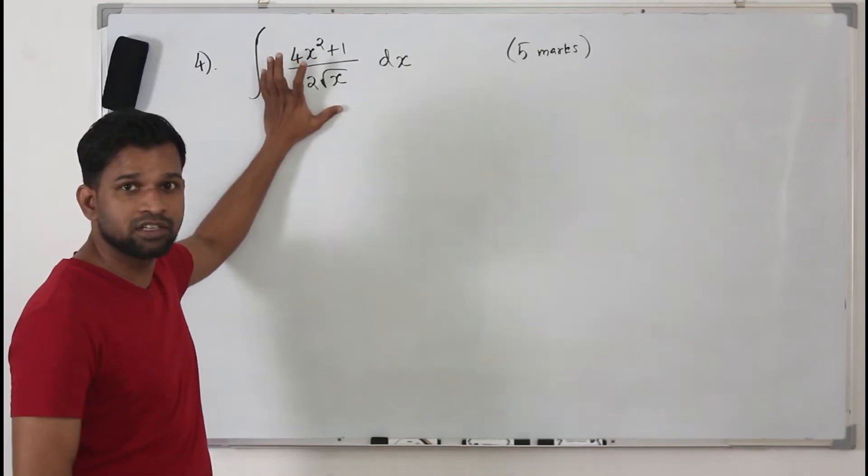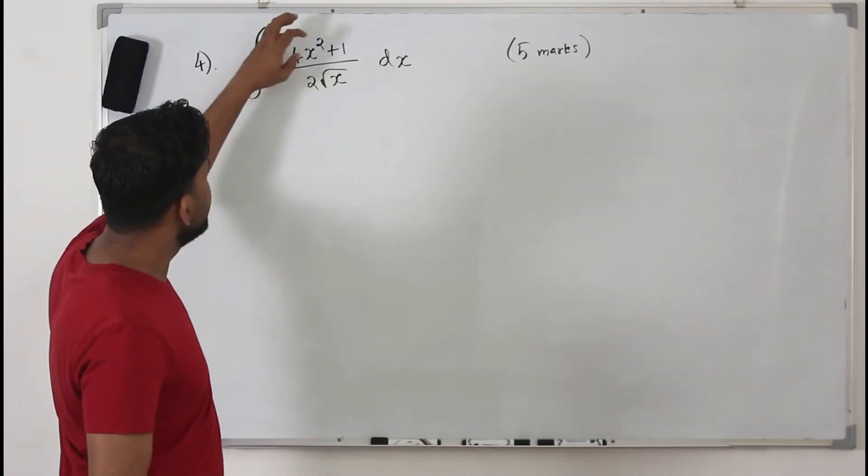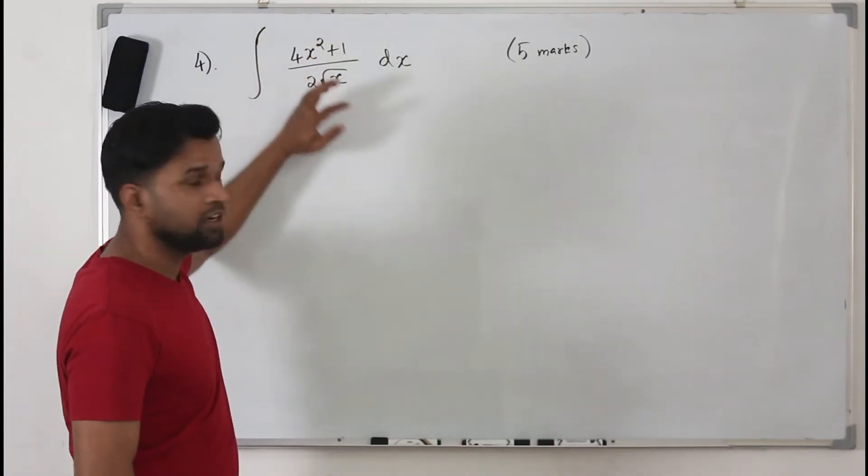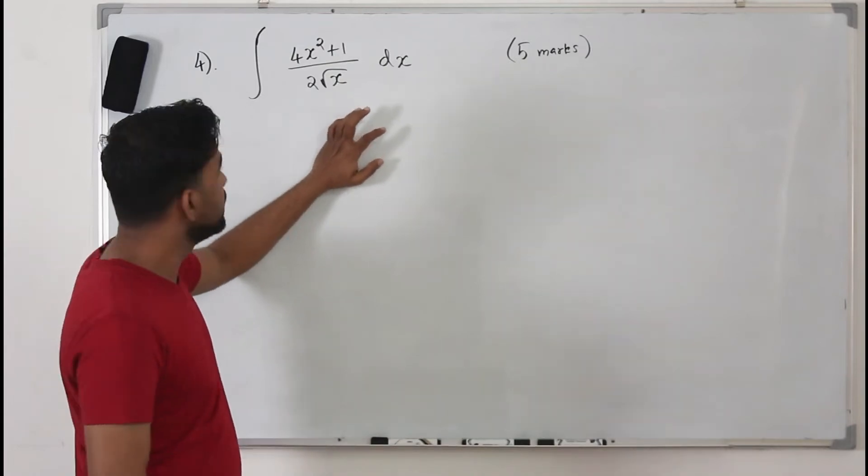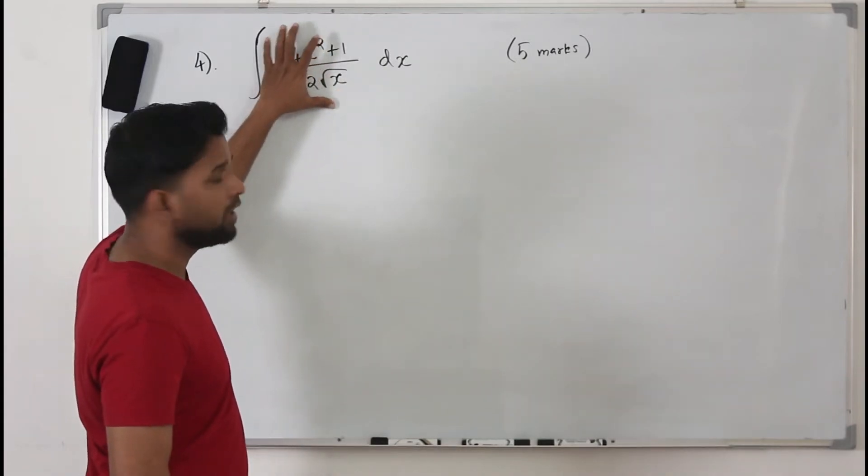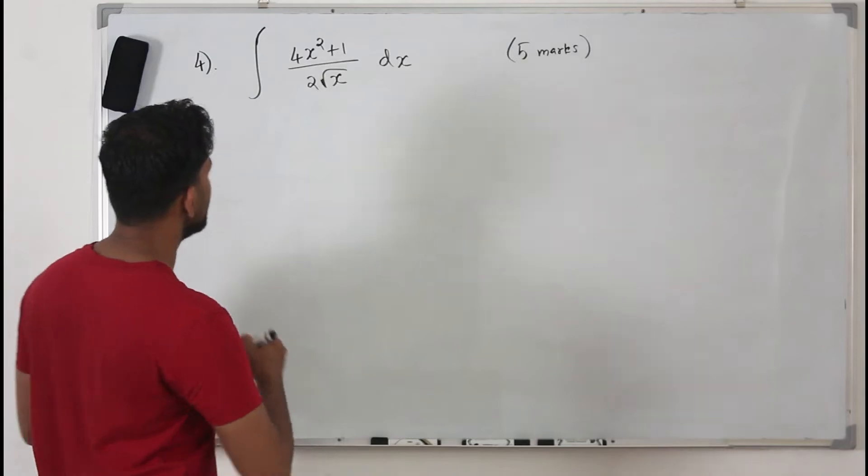So how do we integrate this? If we have functions like this, you cannot integrate them separately, the numerator and the denominator separately, which is wrong. You need to apply the laws of indices and simplify this function.